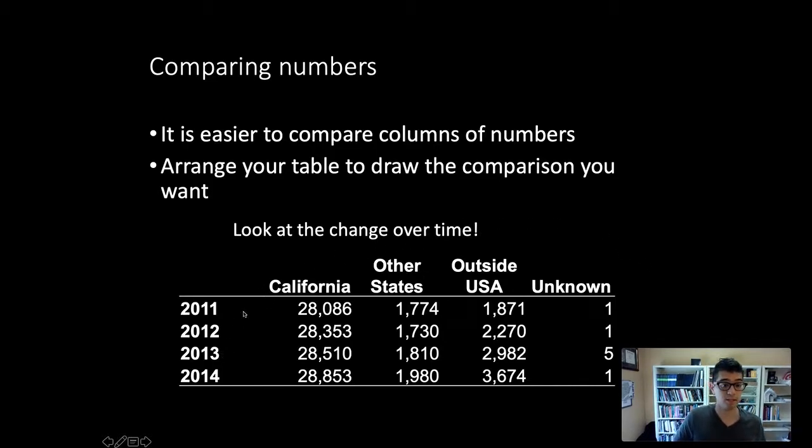If we arrange the table differently, with the years down the rows and residency types across the columns, then when we're looking down the columns what we're comparing is how many California residents there were in 2011 to 2012, 2013, etc. Now we're looking down the columns and seeing that the number of California residents is pretty stable. There was an increase from 2011 to 2014 of less than 800 out of more than 28,000—the increase wasn't huge.